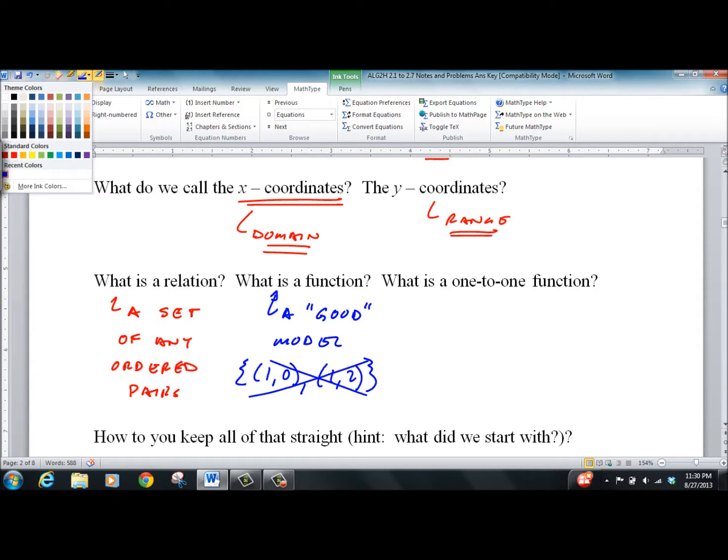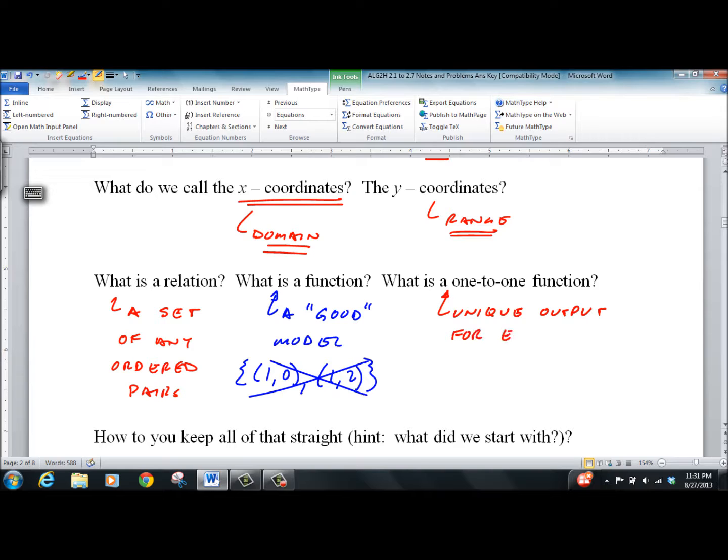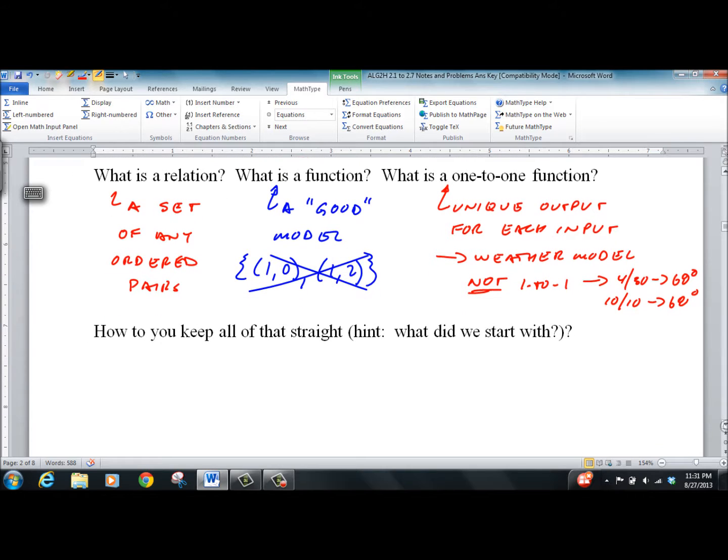Now, that model I just gave you is not a one-to-one function. The one-to-one function is a unique output for each input. So my weather model is not one-to-one because on April 30th, it might be 68 degrees. And on October 10th, it might also be 68 degrees. So unique one-to-one function means that each one spits out just one unique answer that does not pop up anywhere else. All linear functions are one-to-one.